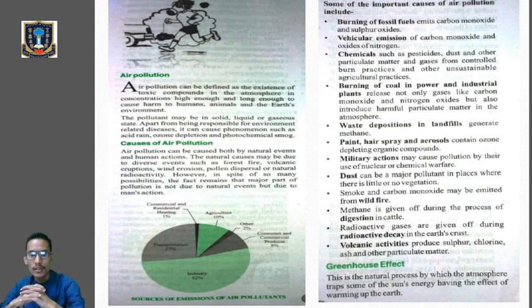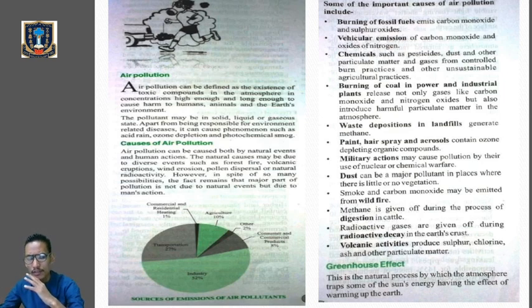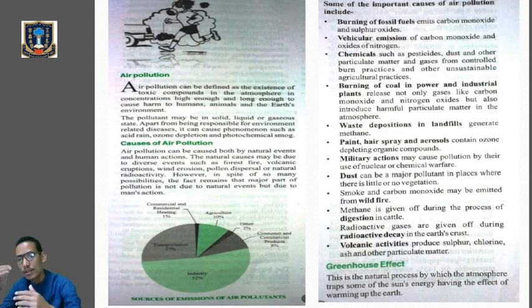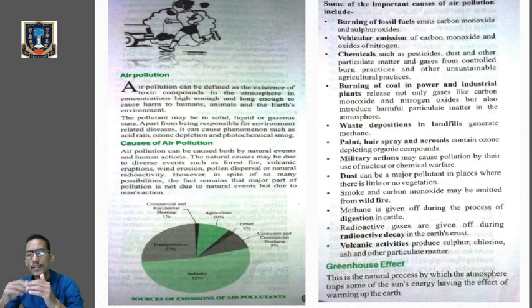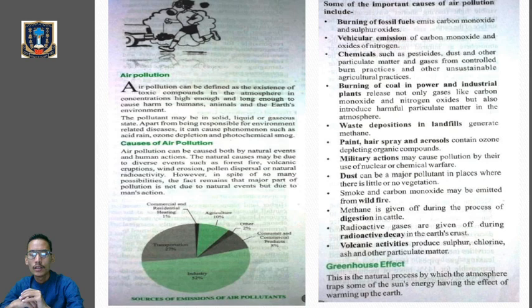To summarize the causes of air pollution: natural sources include forest fires, volcanic eruptions, wind erosion, pollen dispersal, and natural radioactivity. Man-made sources include burning of fossil fuels, vehicular emissions, use of chemicals, burning of coal, waste in landfills, paint, hairspray and aerosols, military actions, and dust. Generally, man-made sources contribute the major part of pollutants in the air, causing air pollution.